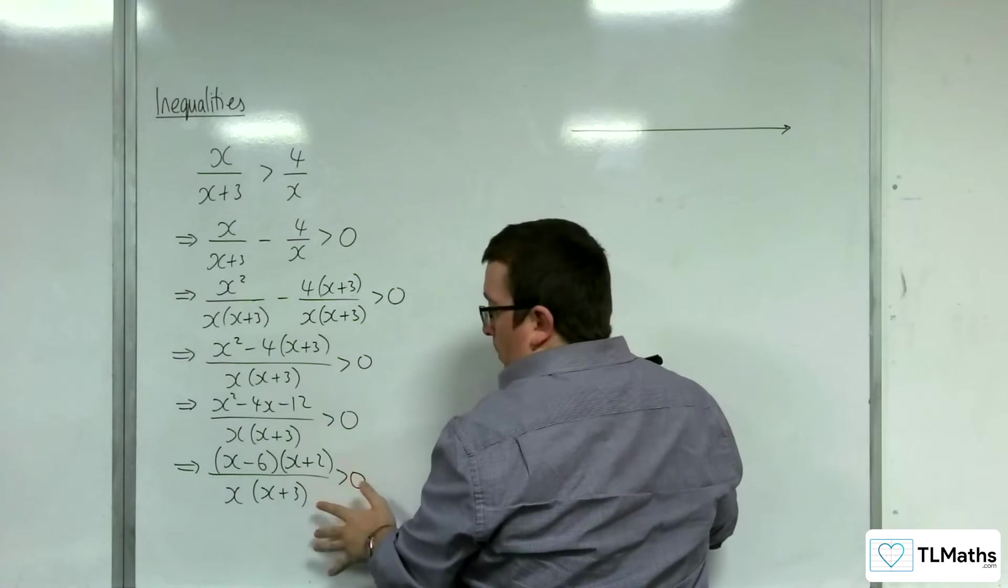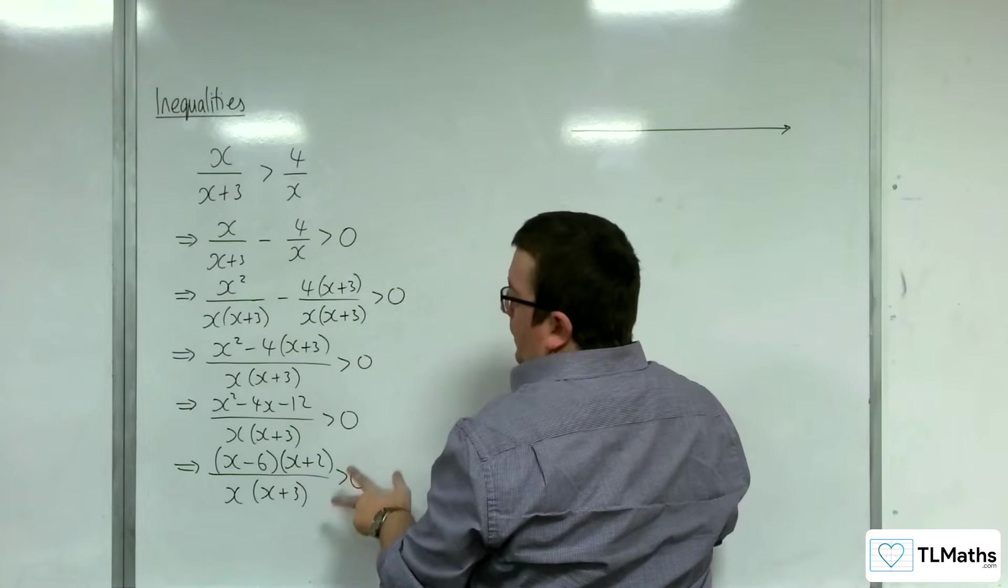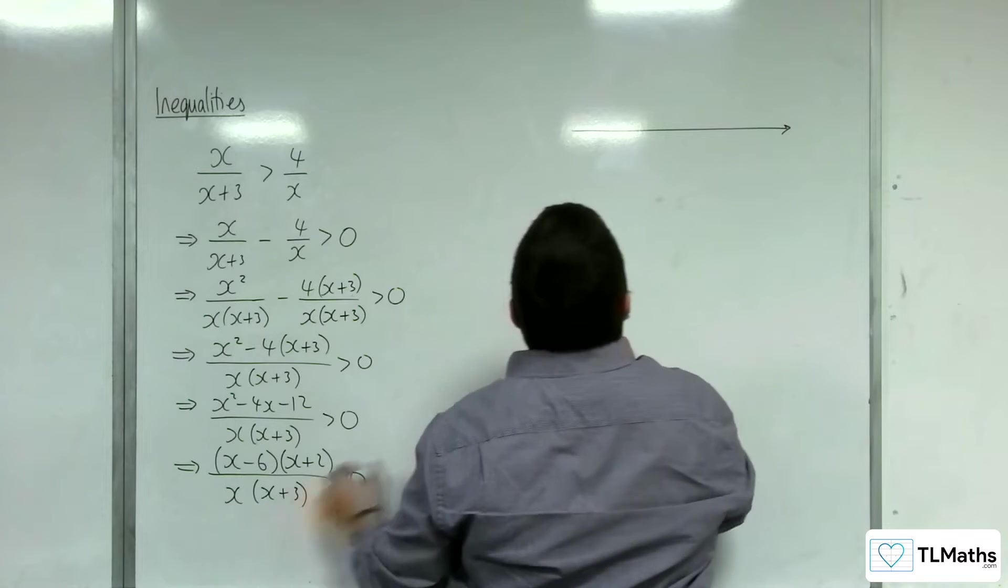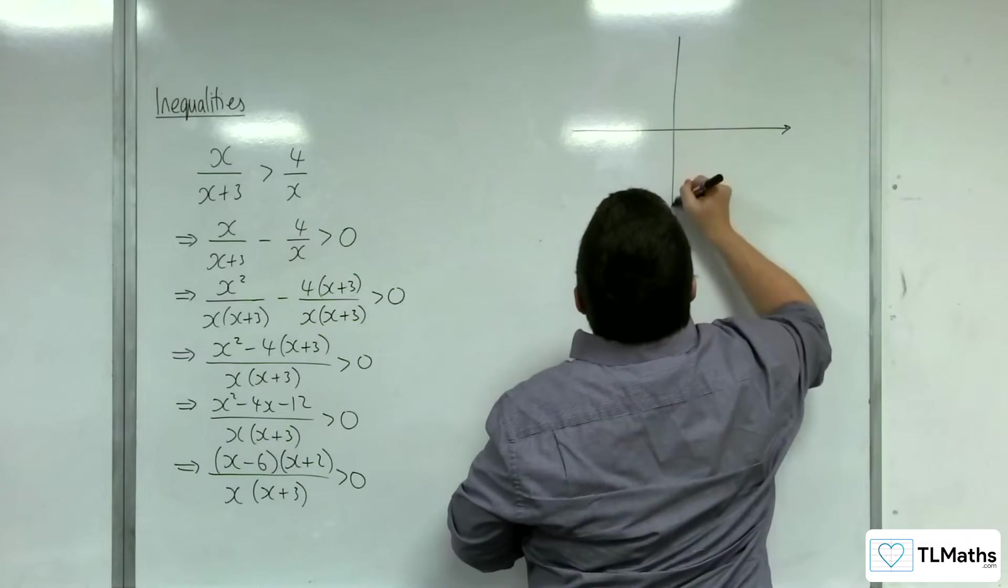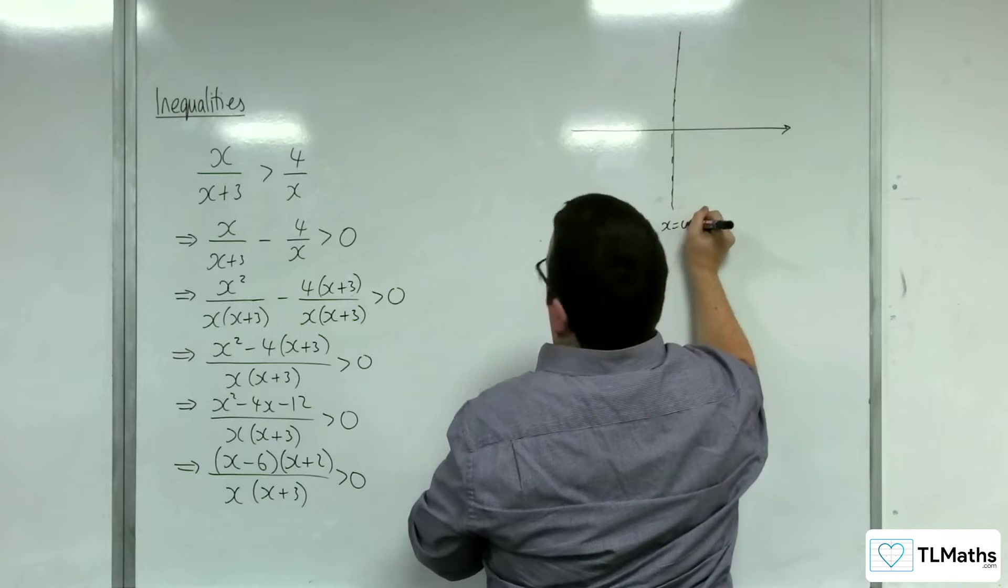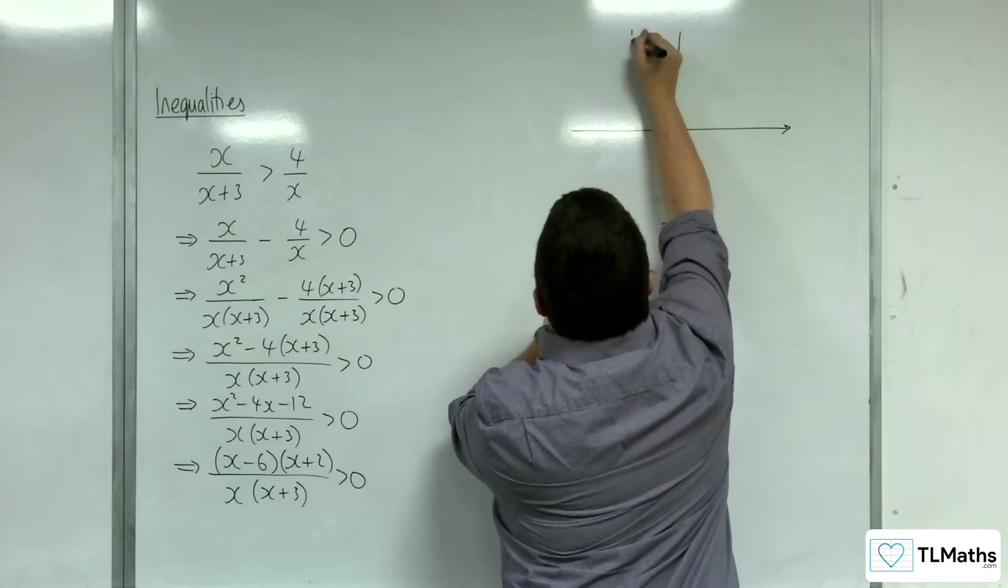Obviously this is a complicated one to sketch. So it's got actually two vertical asymptotes. When x is 0 and when x is minus 3. So when x is 0 is a problem, and when x equals minus 3 is a problem.